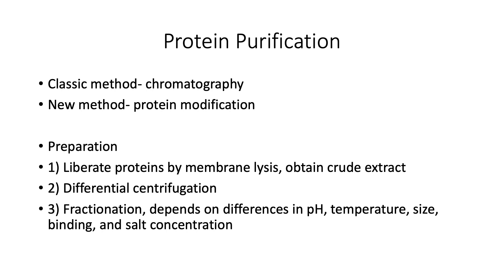We'll talk about protein purification first. The classic method of purifying proteins revolves around various forms of chromatography, which is the separation of substances. Newer methods involve protein modification. The broad template of protein purification relies on the same set of initial steps — the first issue is to liberate proteins by membrane lysis. You can use substances to break apart cell walls, cell membranes, and organelles if necessary.